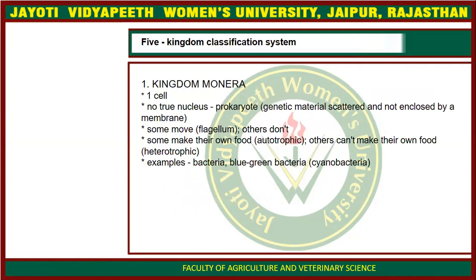We will discuss the characteristics of Kingdom Monera. The members of Monera have a single cell and they have no nucleus — meaning the nucleus does not have any surrounding membrane. Their genetic material, that is their DNA and RNA, is not enclosed in a membrane; it is naked. So they are also known as prokaryotic organisms. Some members of Kingdom Monera have the ability to move because they have a flagellum.